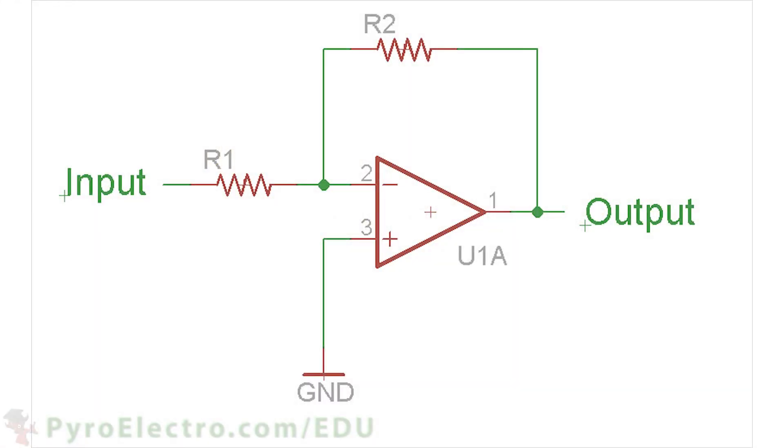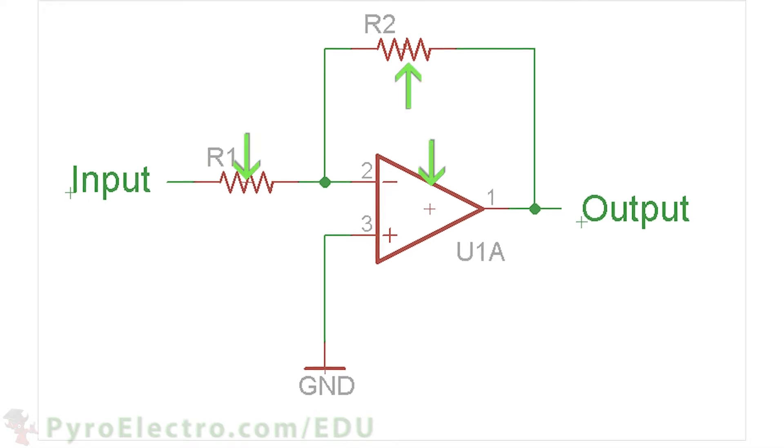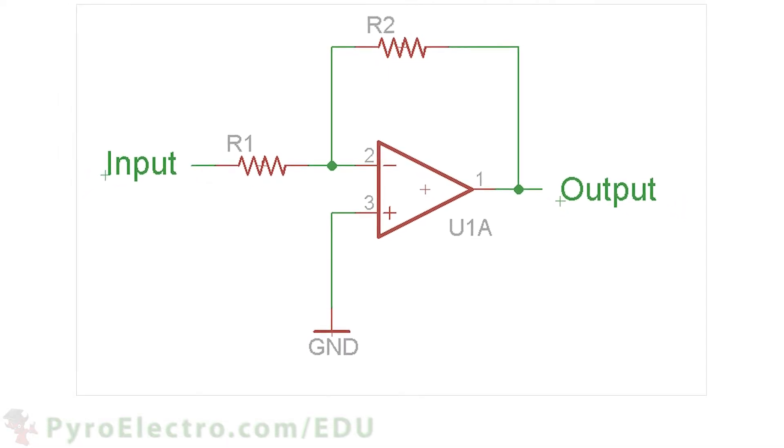The standard inverting amplifier circuit looks like this, one op-amp and two resistors. It's really that simple.